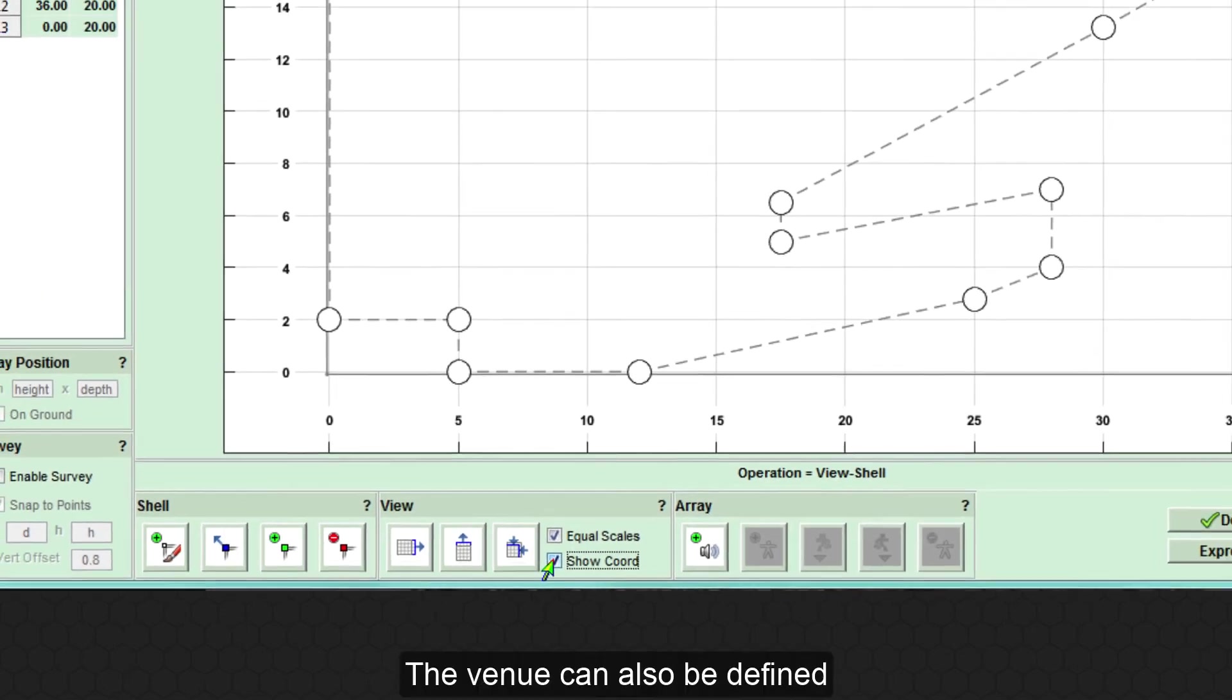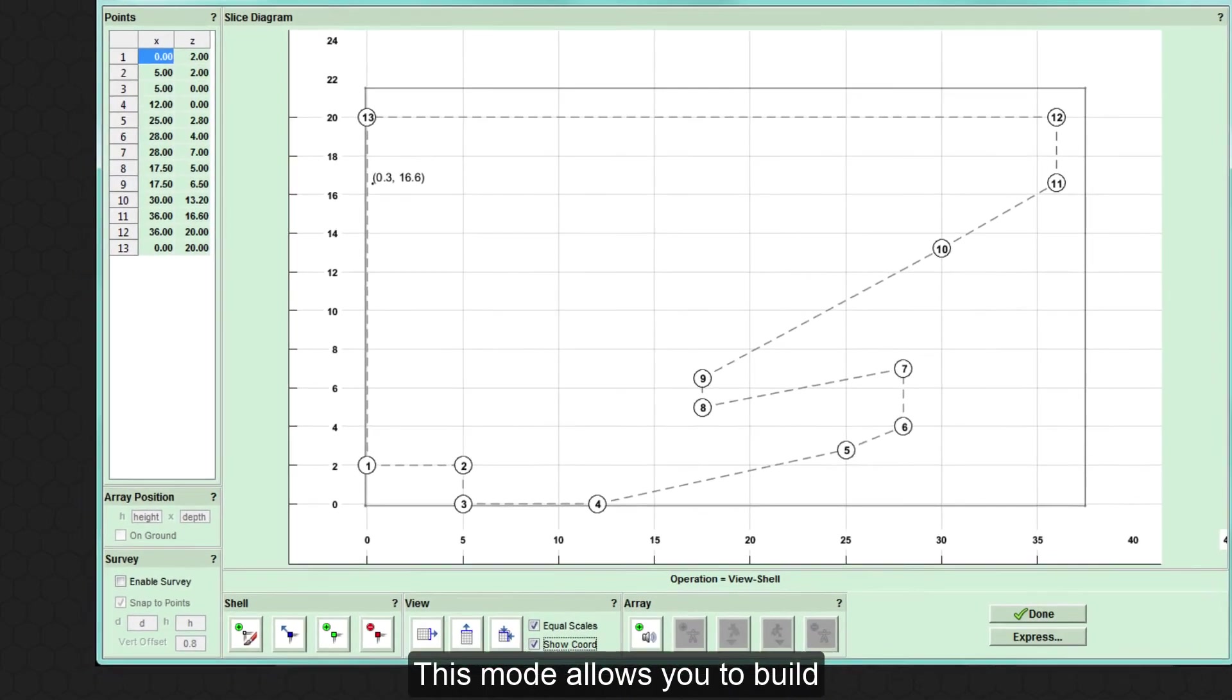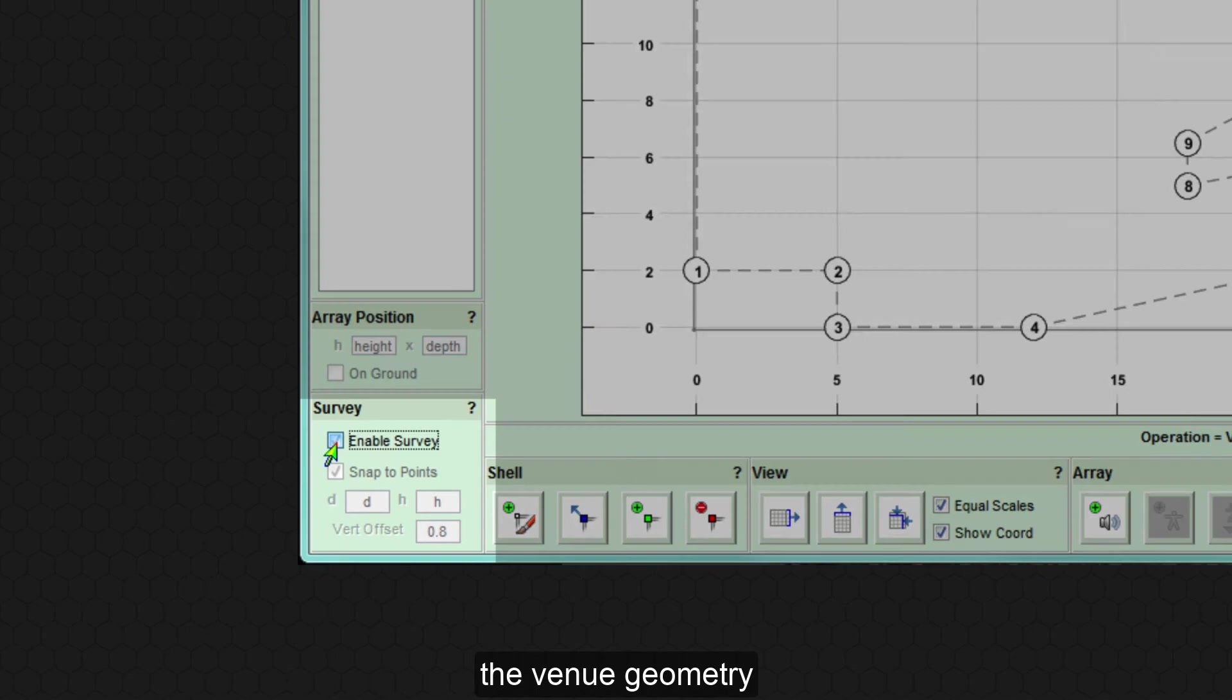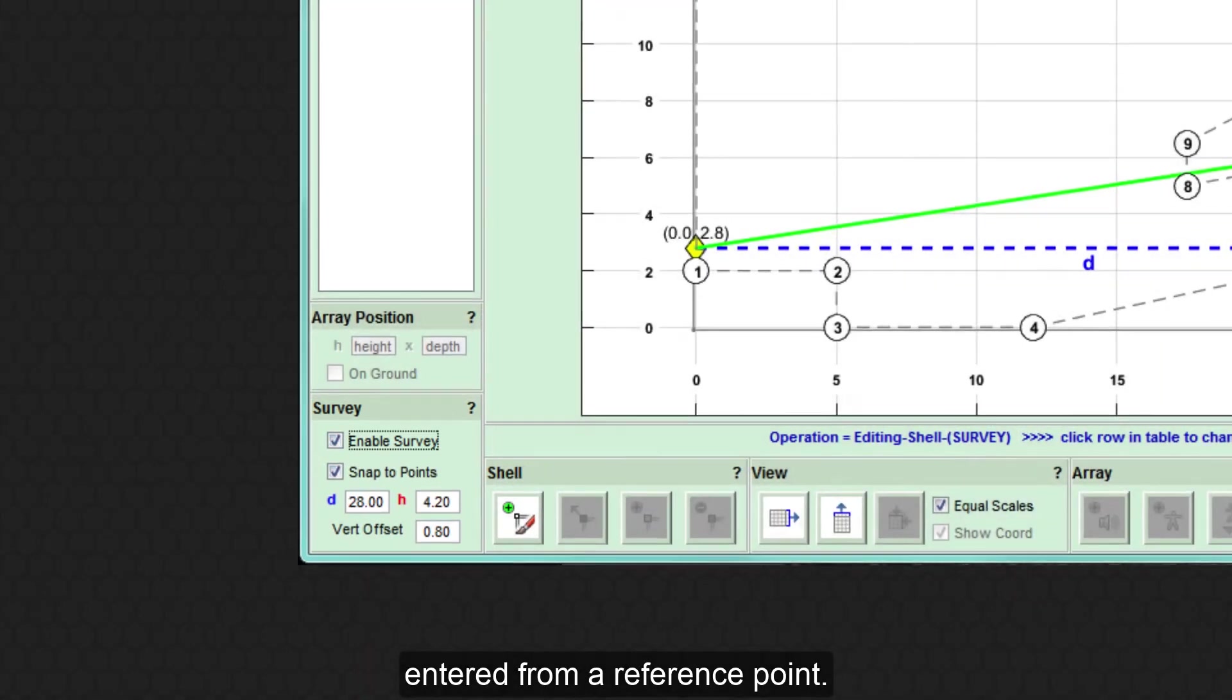The venue can also be defined by using a polar coordinate system called survey mode. This mode allows you to build the venue geometry by using a distance and angle measurement entered from a reference point.